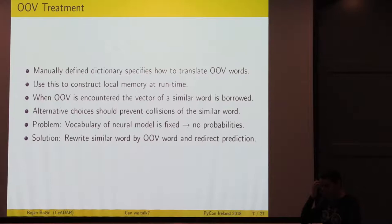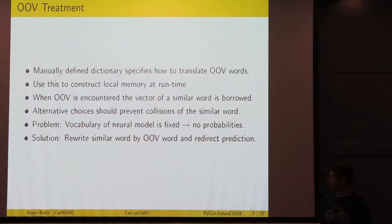The most interesting thing is the out of vocabulary treatment. This is the question, what happens if I encounter a word that's not in my dictionary or hasn't been treated yet. We have a manually defined dictionary that specifies how to deal with out of vocabulary words. We can use it to construct a local memory at the time. If you encounter a similar word, we just borrow it. Although we have no probabilities, we can rewrite the similar words with the out of vocabulary word. We take over the new words into our memory model and then use it to refer back afterwards.